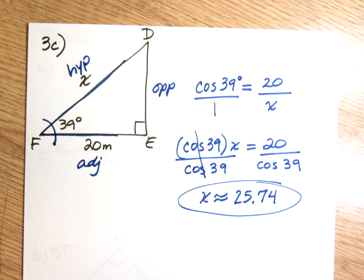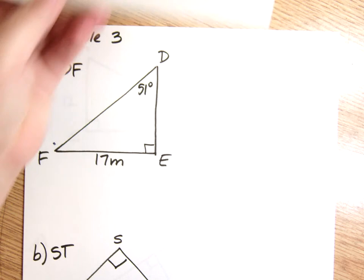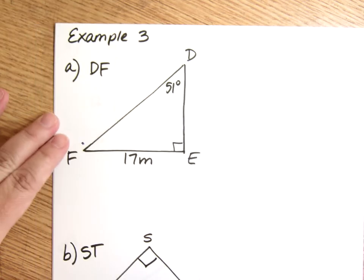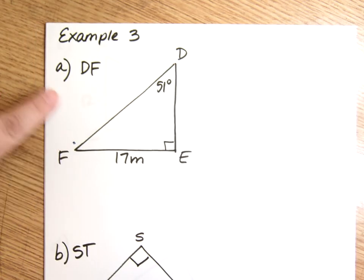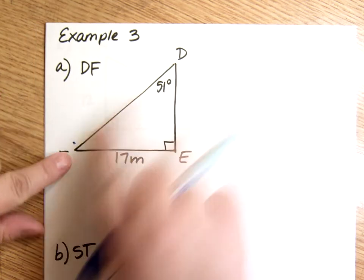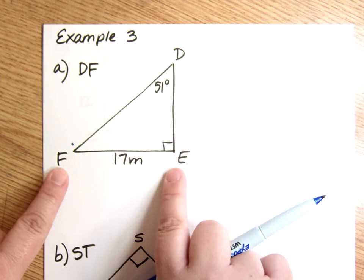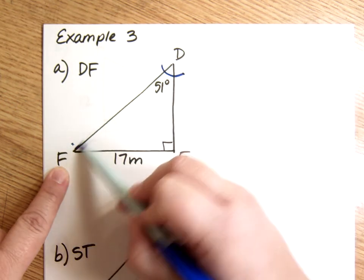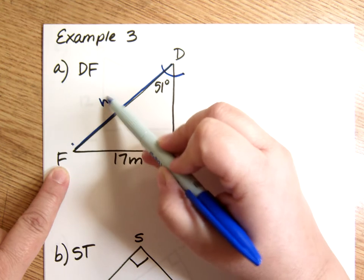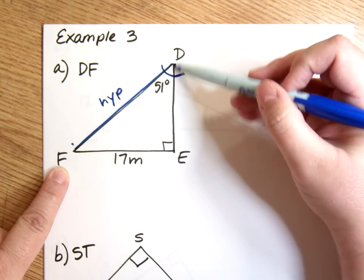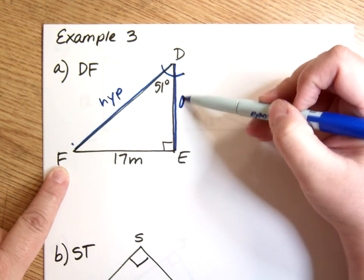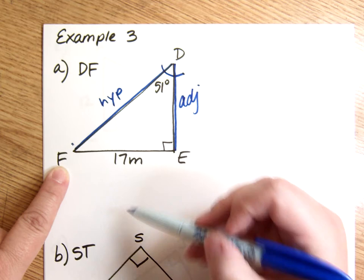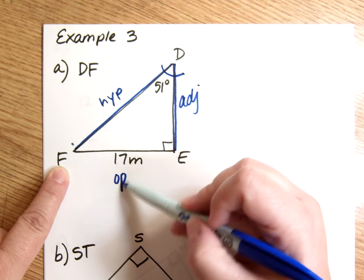All right, next. This is from our note sheet. It says example three, you try. So we're going to go through those examples together. The first one asks me to find DF in my right triangle DEF, and it gives me angle 51 up here. So here's the hypotenuse. The other side of my angle is always the adjacent, so this must be the adjacent. And this then has to be my opposite.